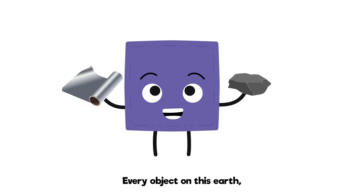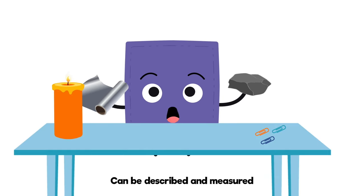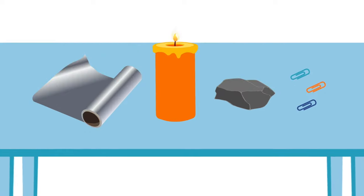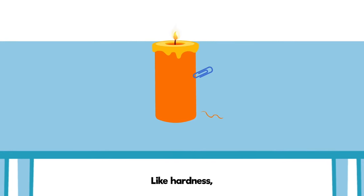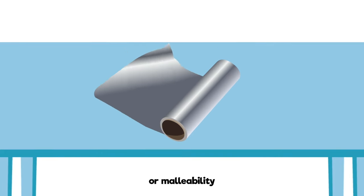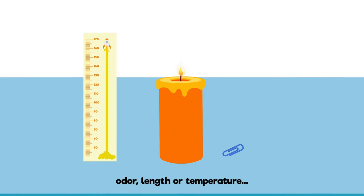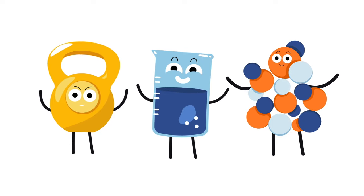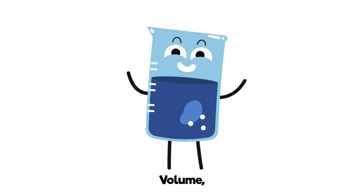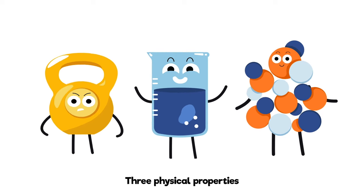Every object on this earth, every substance that you see, can be described and measured by physical properties, like hardness, color, or malleability, odor, length, or temperature. Mass, volume, density. Three physical properties.